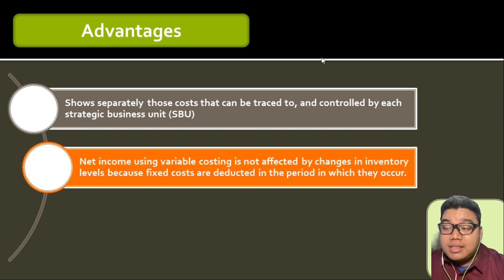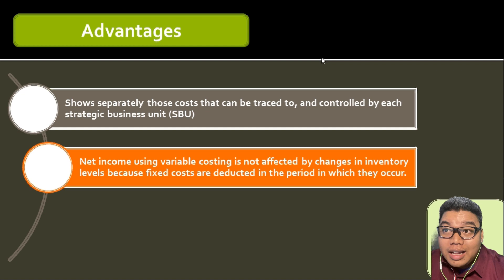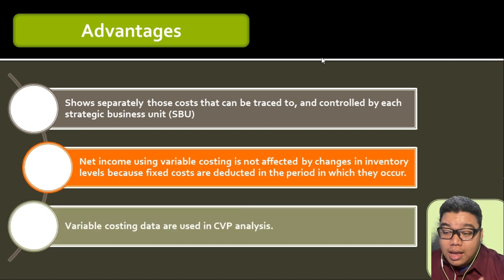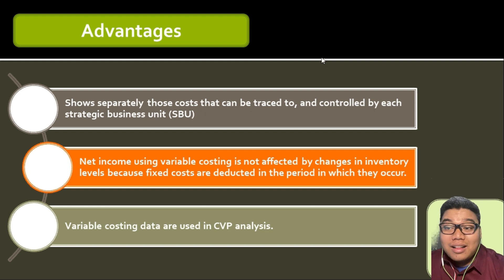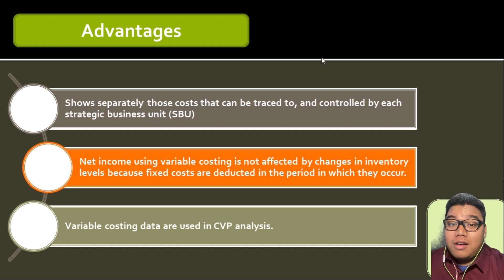Next, net income using variable costing is not affected by inventory levels. When we have more units in inventory than previously, that would result in a higher income under the absorption approach compared to the variable approach — we will see that analysis in our sample problem. Additionally, variable costing data are used in CVP analysis, or cost-volume-profit analysis, where we analyze the impact of changing costs and volume on the overall profit of the organization. This will be further discussed in forthcoming chapters.